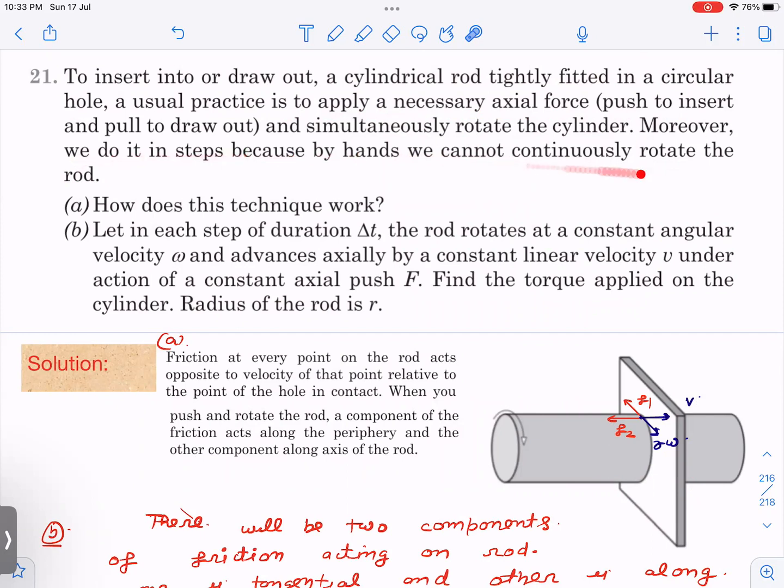There are many students who have doubt in this. What they are trying to say is that since you can't rotate from your hand continuously, you can't twist your hand by two pi, four pi, and six pi. So you have to give one turn, then stop, then give another turn and keep going this way. First question is, how does this work?